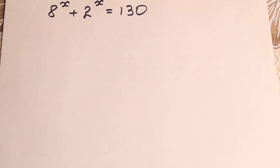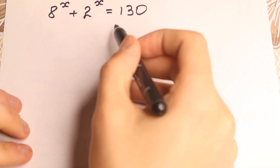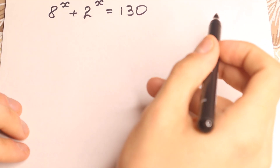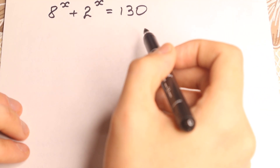Okay, really interesting exponential equation today: 8 to the x plus 2 to the x equal to 130. We need to find our x. Really interesting exponential equation and I hope you will enjoy this video.